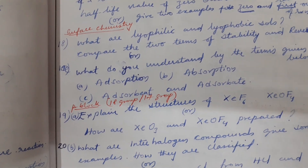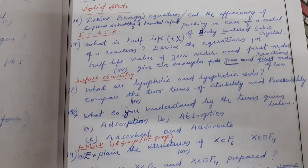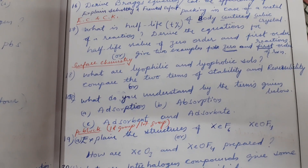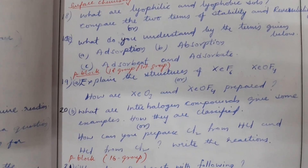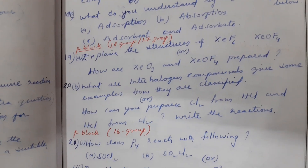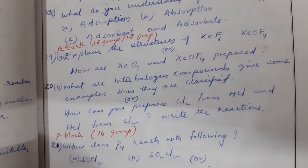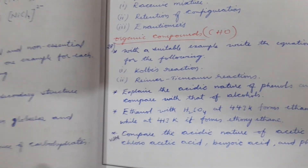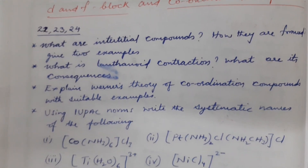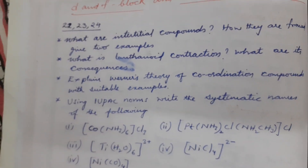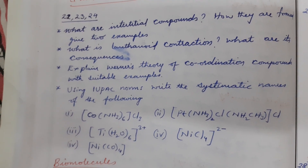P-block elements. Please have a look at the questions — once again from Section B, I will show you. So these are the questions. We move on to the next page: D and F block and Coordination Compounds. SAQs, second year chemistry, we have been discussing. Please make a note of these questions.